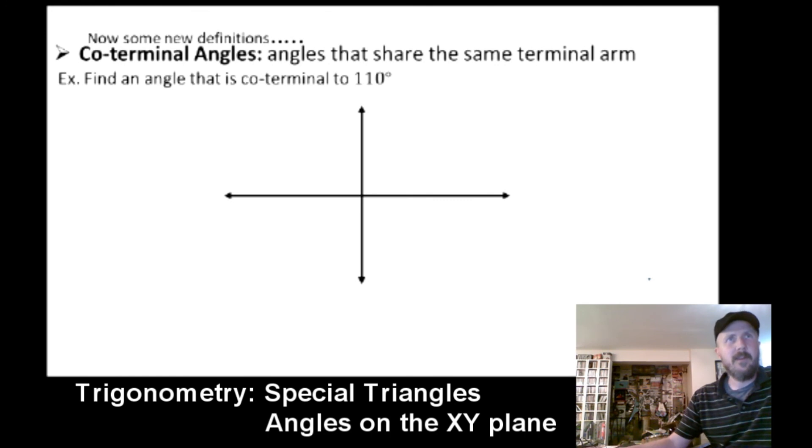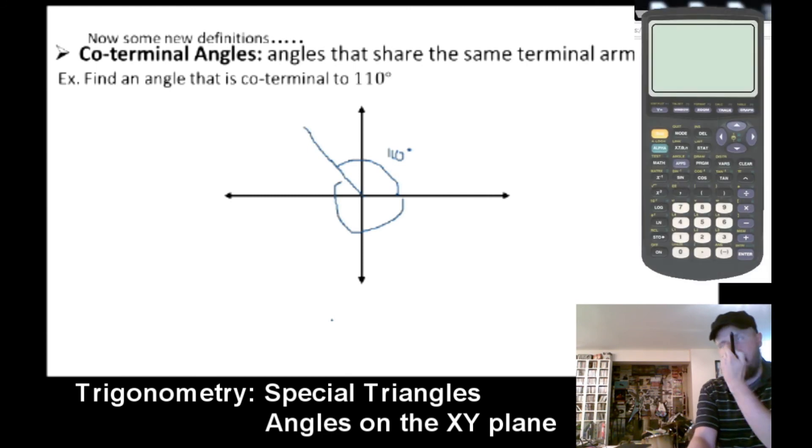Okay. We already did co-terminal that share the same terminal arm. So let's do one here. We may as well. 110. So this is 180 over here. Here's 90. So it's somewhere up here. 110. Co-terminal angles, angles that share the same terminal arm. So an easy way is to go 360 minus 110. I'll get my calculator back up here. Got to turn it on. 360 minus 110 gets me 250. So negative 250. So negative 250 is a co-terminal angle. That was pretty quick.